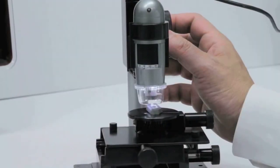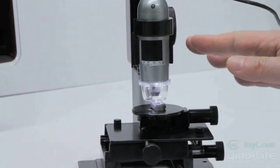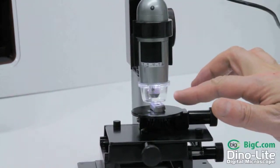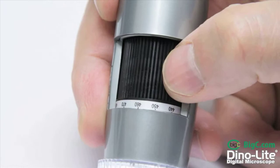Introducing the AM4013ZT4. This ZT's working distance is between 0 and 7 millimeters with magnification powers of 400 to 470.